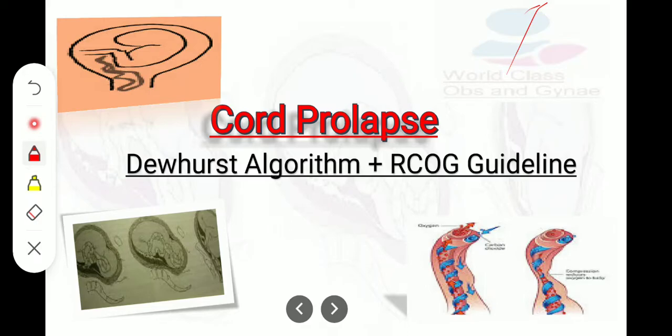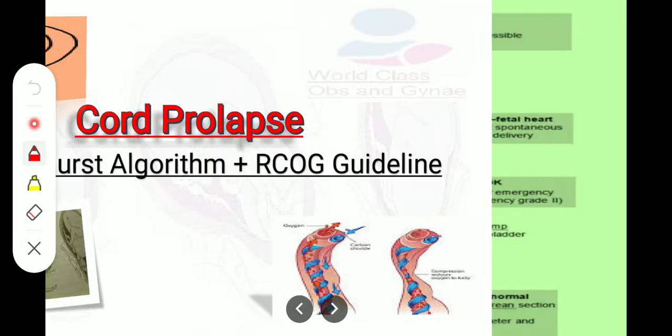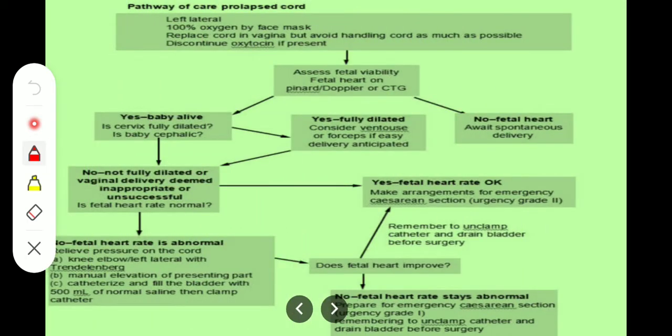The topic of our discussion is cord prolapse. I will emphasize the DUHIRS algorithm for cord prolapse and RCOG guidelines. Let us turn to the DUHIRS algorithm for cord prolapse.